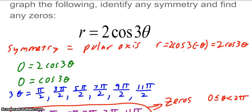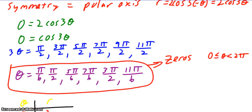So the only symmetry is polar axis. I know that I have a bunch of zeros at pi halves, 3 pi halves, 5 pi halves, 7 pi halves, 9 pi halves, 11 pi halves, for 3 pi—I'm sorry, for 3 theta. So if it's theta, then the zeros are at pi 6, pi halves, 5 pi 6, 7 pi 6, 3 pi halves, and 11 pi 6. So these are all of the zeros between 0 and 2 pi.